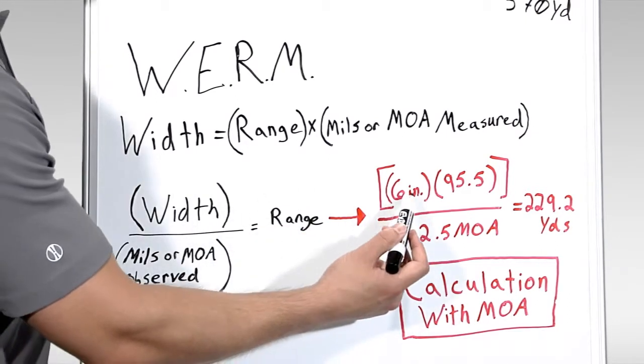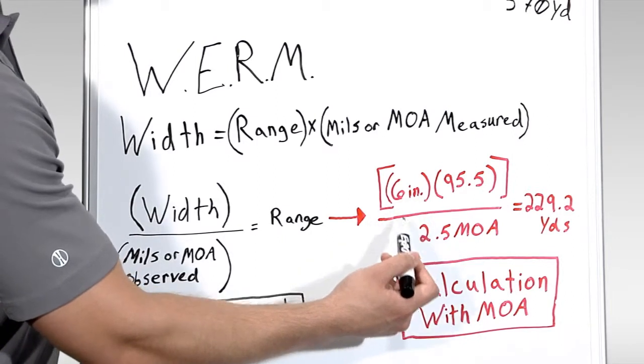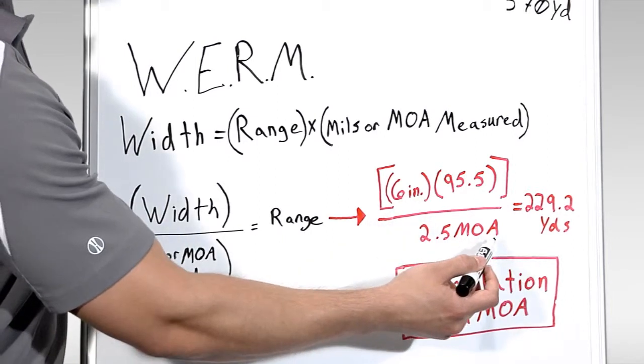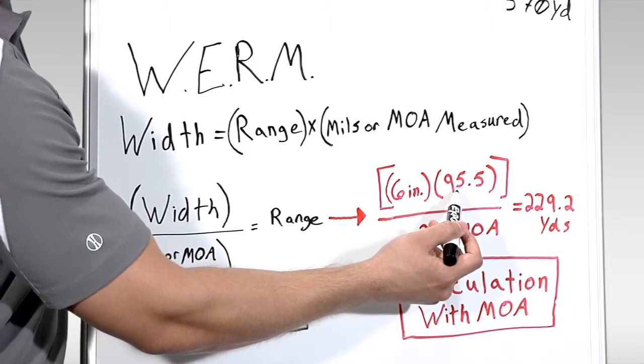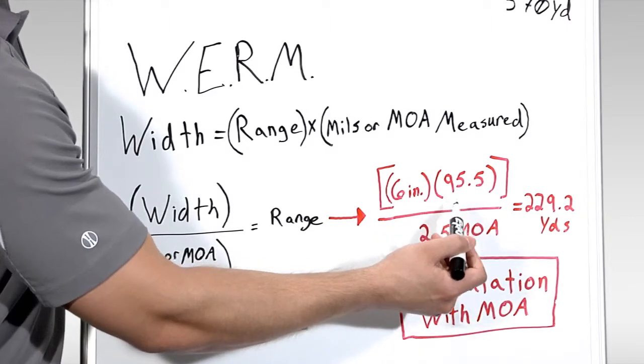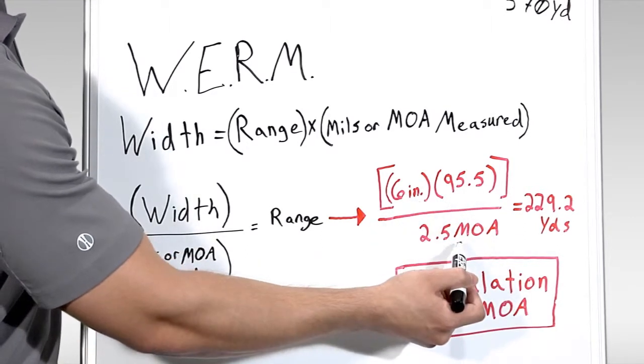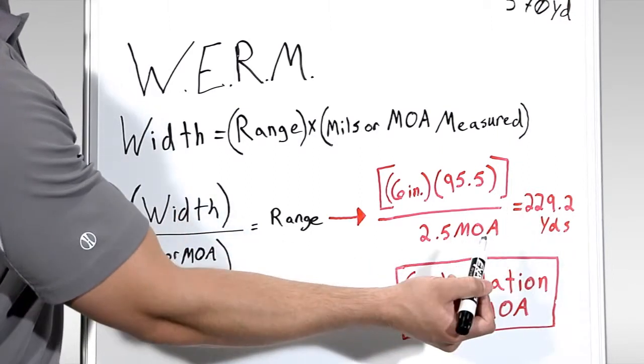So using what we learned, we know our target is six inches wide, and we know that it filled out 2.5 MOA. Here we fill in 95.5. This number keeps our inches constant in relation to our minute of angle to give us an accurate yardage reading.